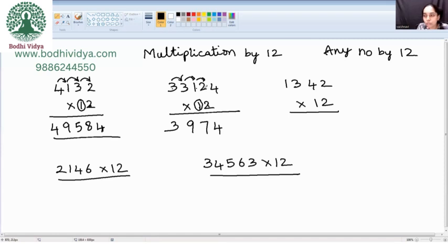2 into 2 is how much? 4. 4 plus 4 is how much? 8. 2 into 4 is how much? It is 8. This is the final answer.